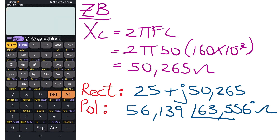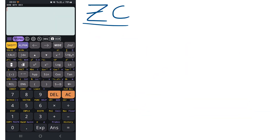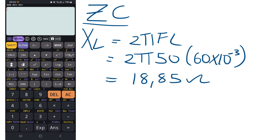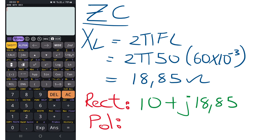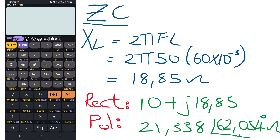For branch C, there's a coil with a resistor and an inductor. Converting 60 millihenry to henry, we calculate the inductive reactance as 18.85 ohms. The rectangular format is 10 ohms plus positive j18.85. We also need the polar format for when we multiply later.